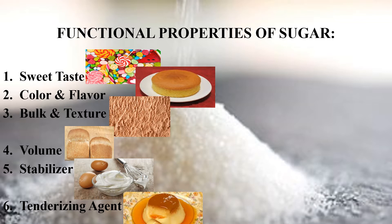Baked products are one of the best examples. Sugar also gives bulk and texture to food. Depending on the concentration of a product, it provides bulk — like ice cream. In ice cream, sugar and cream ki wajah se overrun hota hai toh bulkiness provide hoti hai, aur jam is also one of the good examples.